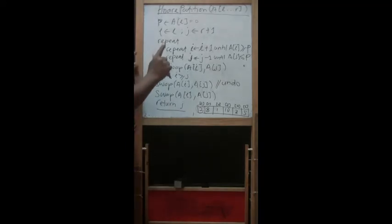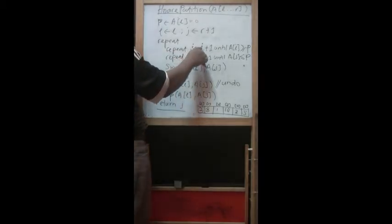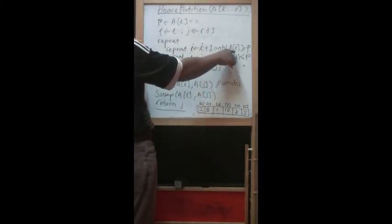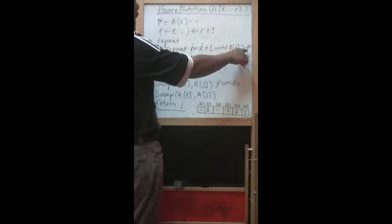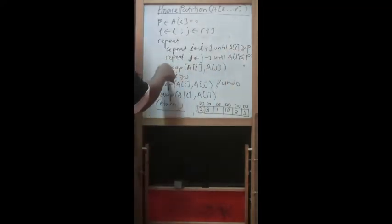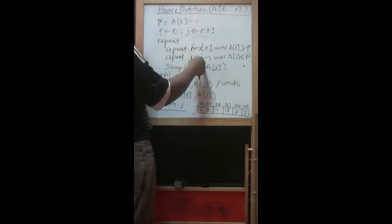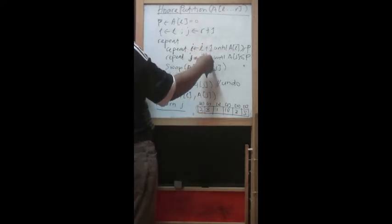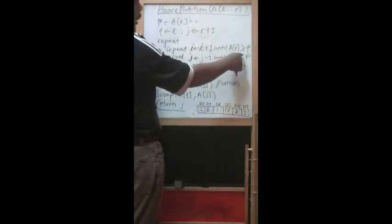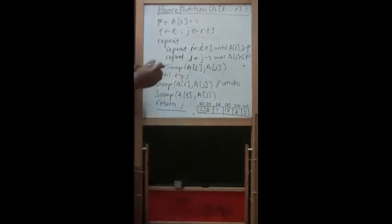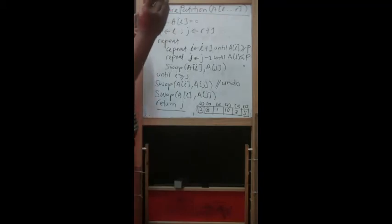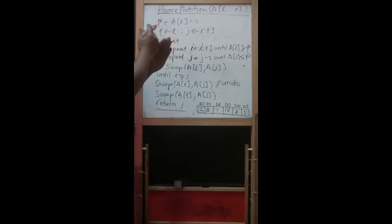We have two directions: I starts from the left and moves right until A[I] is greater than or equal to P. The second side is J decreasing by 1 until A[J] is less than or equal to P, meaning we have both sides moving from I and J until they cross over at a certain point called the crossover.